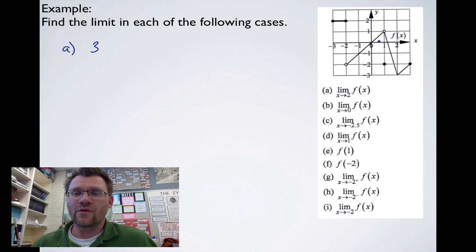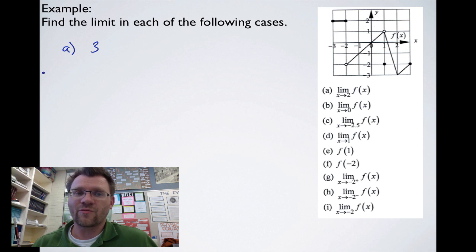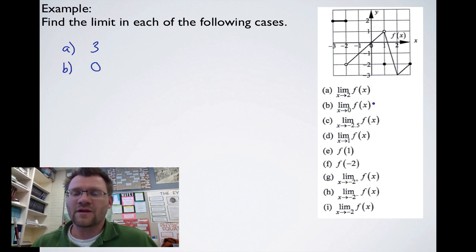For the limit as x approaches 0: here's 0 on the graph. As we approach 0 from the left-hand side, the height is approaching 0. And as we approach it from the right-hand side, the height is also approaching 0. So the limit is 0. For the limit as x approaches negative 2.5: negative 2.5 is right here, and the height as x approaches negative 2.5 from both sides is a height of 2.